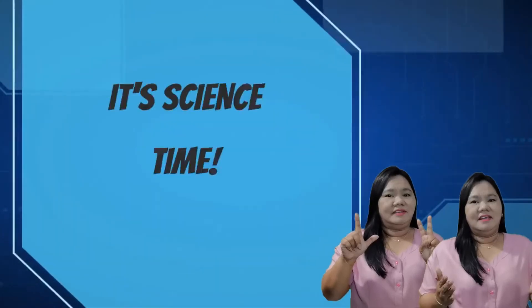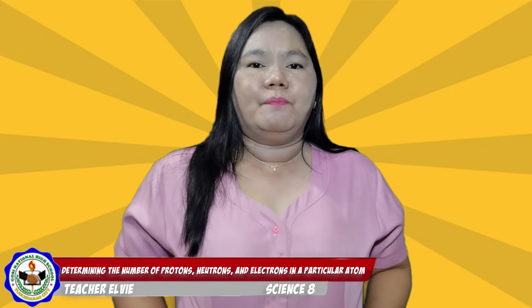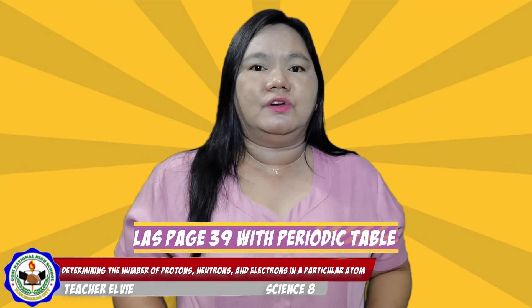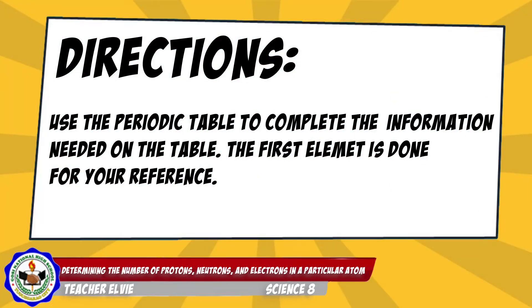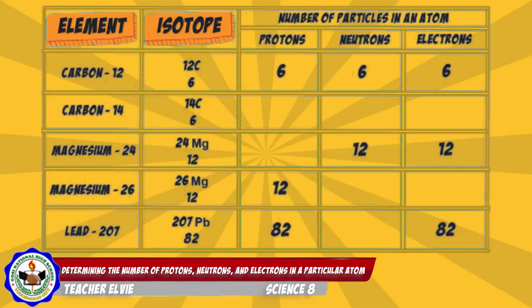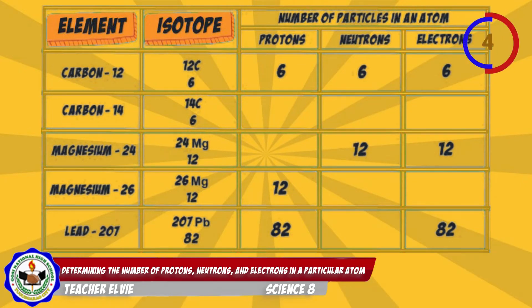Open your learning activity sheet on page 39 together with your periodic table of elements. Directions: Use the periodic table to complete the information needed on the table. The first element is done for your reference. For Carbon-12, the number of protons, neutrons, and electrons is 6. For the second element, Carbon-14, the number of protons is 6, number of neutrons is 8, and number of electrons is 6.